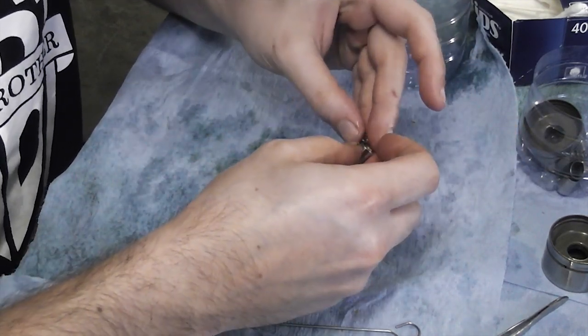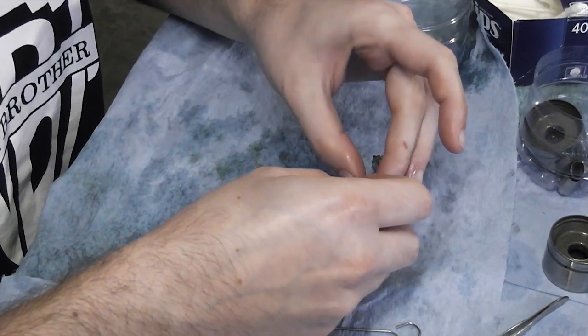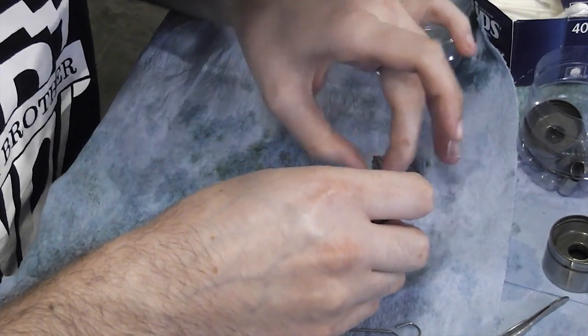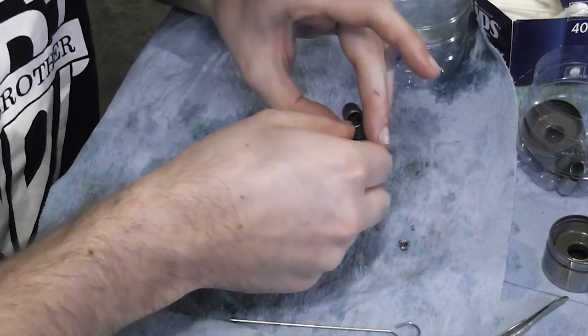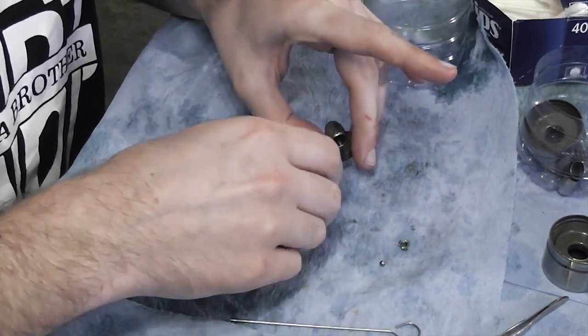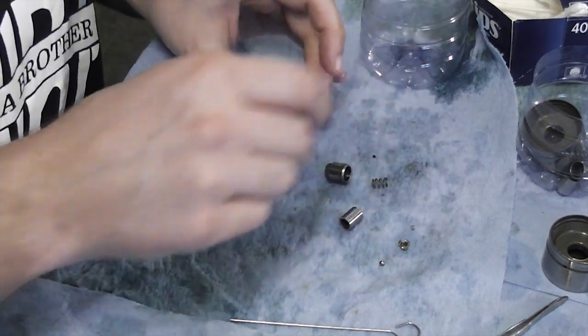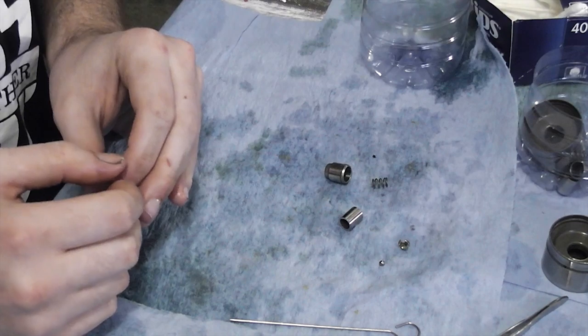So we have the little spring, we have the cap, we have the little ball, we have the small part of the cylinder, the spring and the big part. Those are all our pieces.